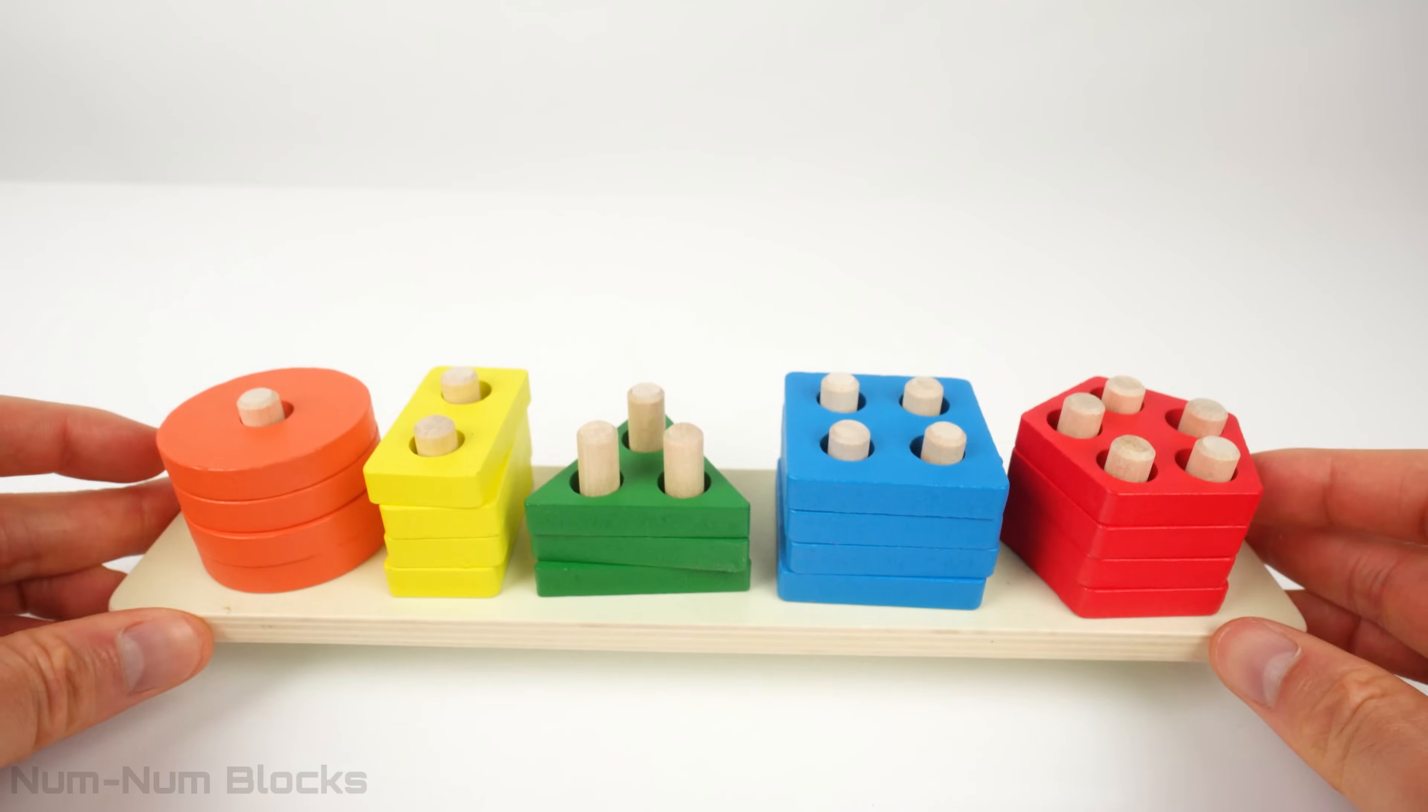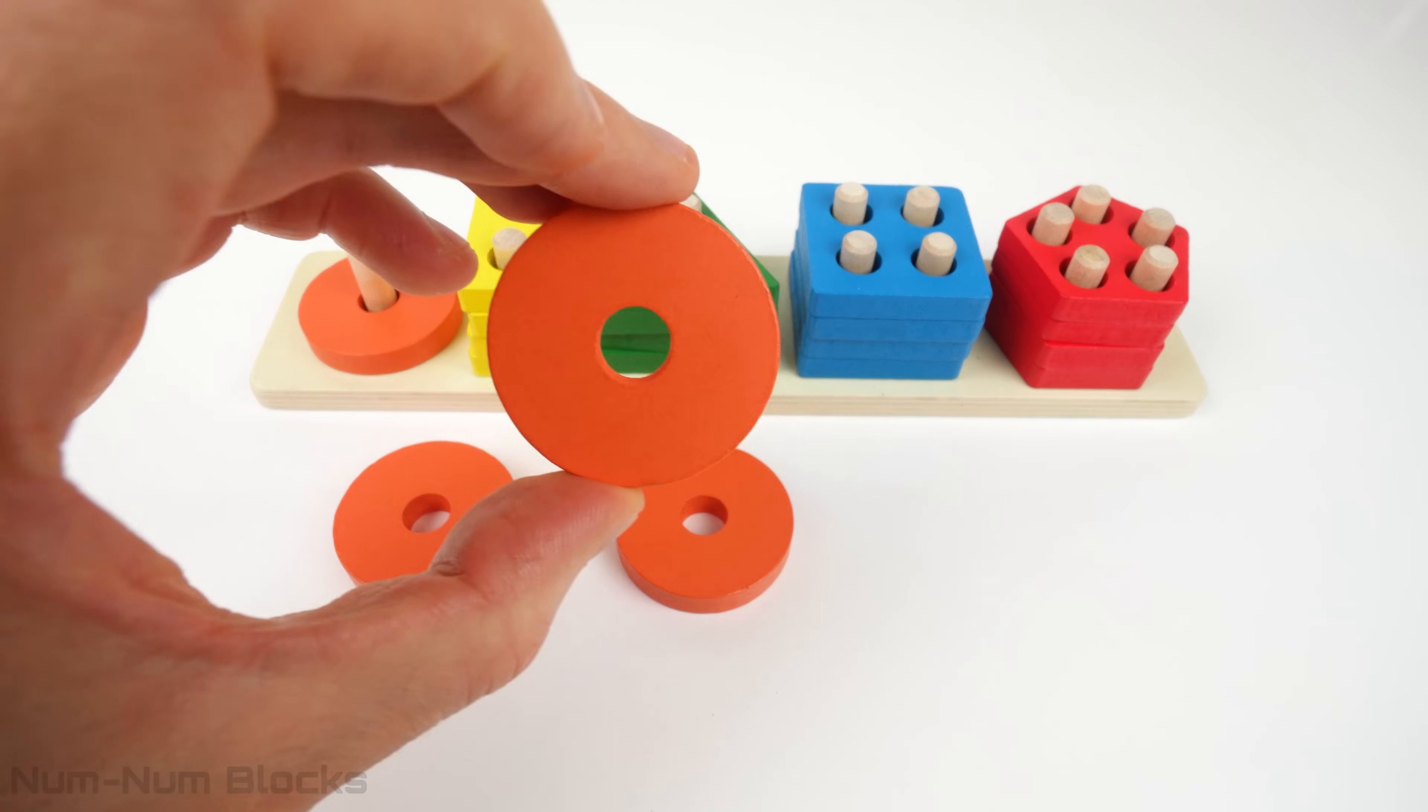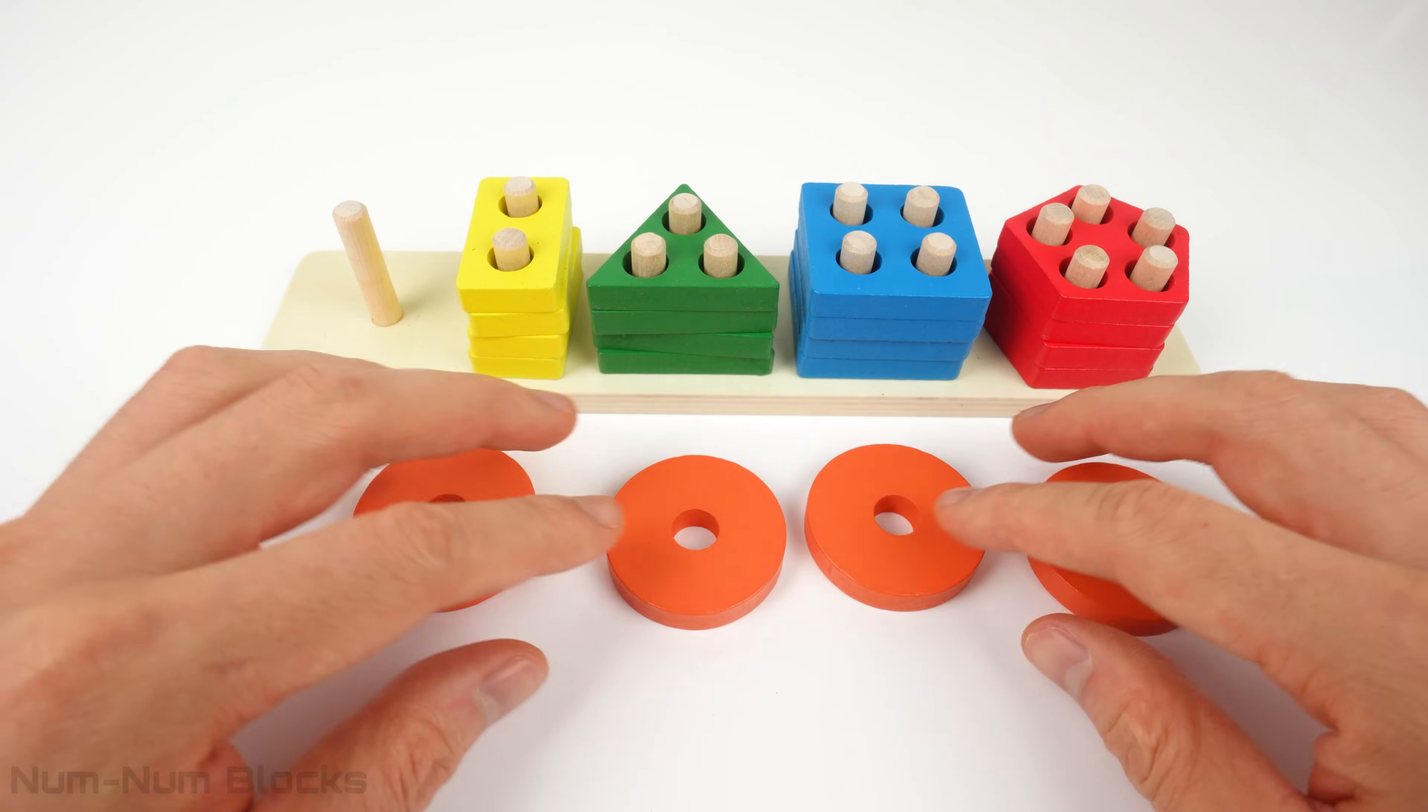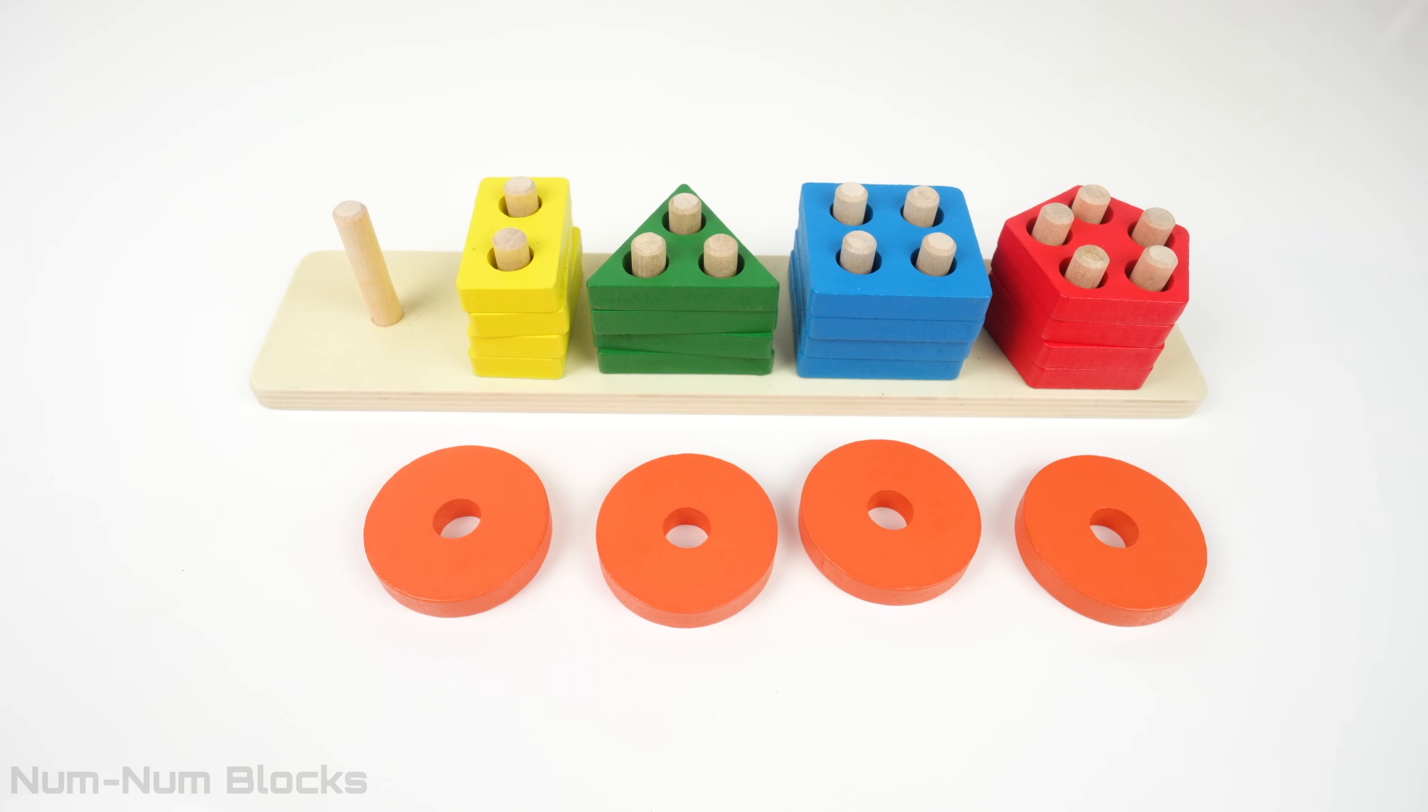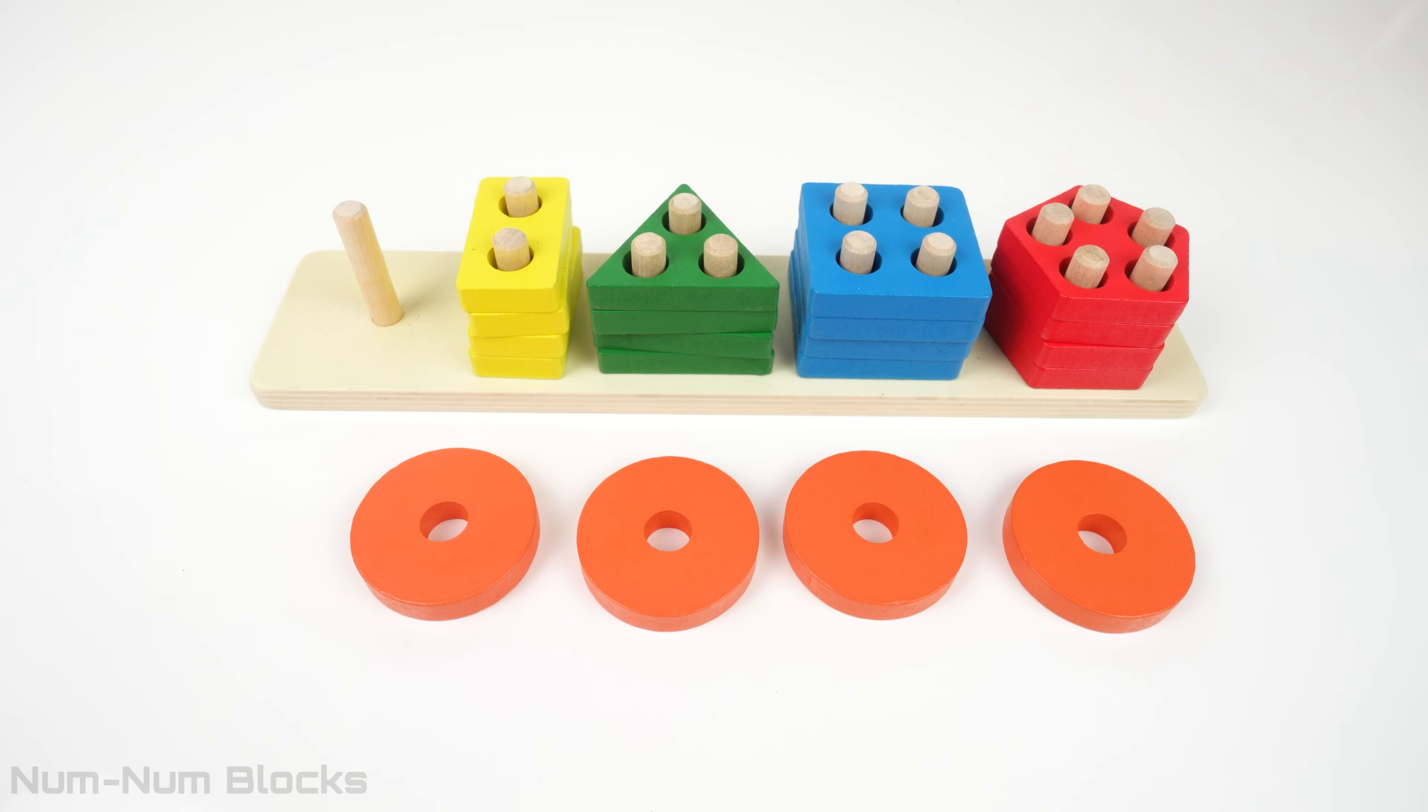I'm going to remove the first shape from the far left spot. One. Two. Three. Four. We have four orange circles. We want only one to match this peg. How many circles do we take away from four to get to one? Do you know?